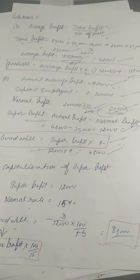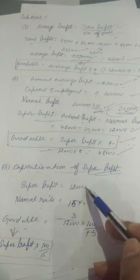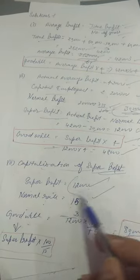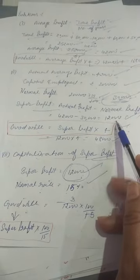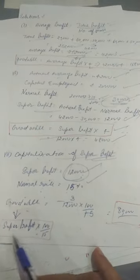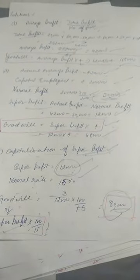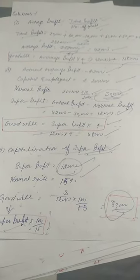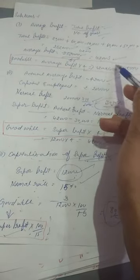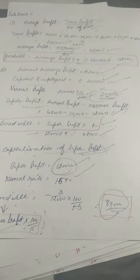The third method is capitalization of super profit. Super profit is 12,000 and normal rate of return is 15%. Goodwill is calculated as super profit multiplied by 100 divided by rate — that is 12,000 × 100/15 equals 80,000. If capitalization of average profit method were used, you would capitalize the average profit at 100/15, then compare with actual capital, and the difference would be the goodwill.